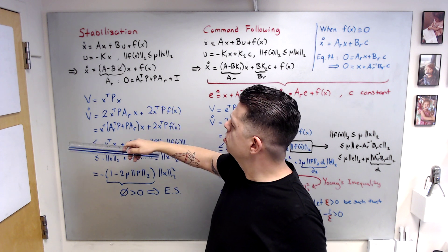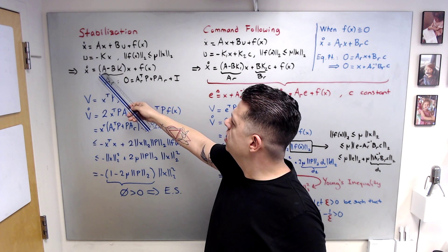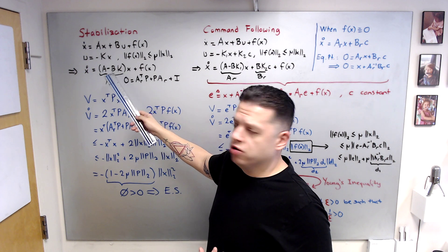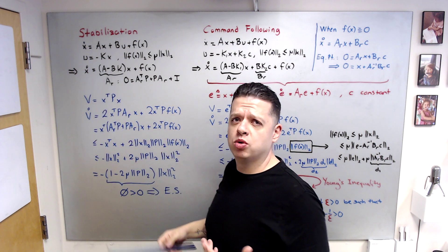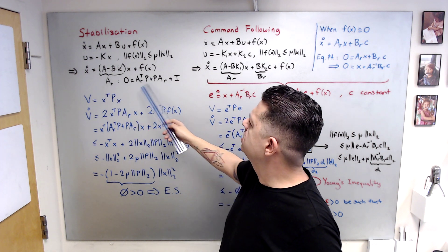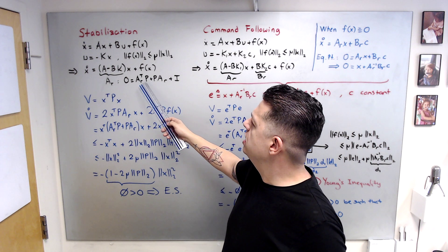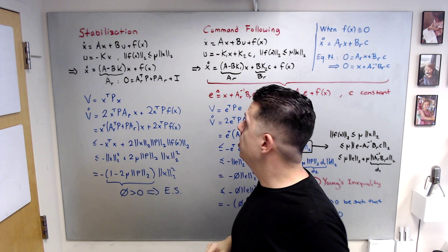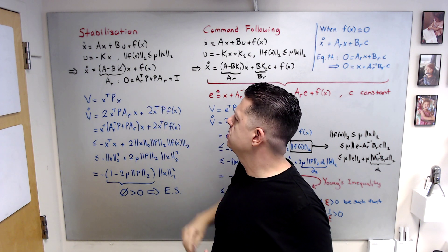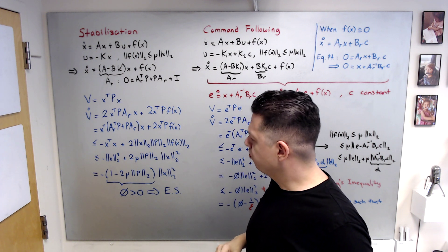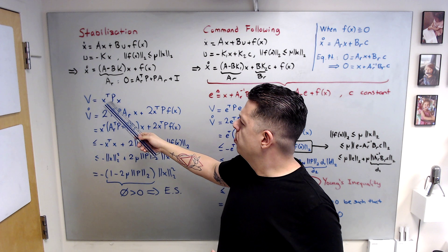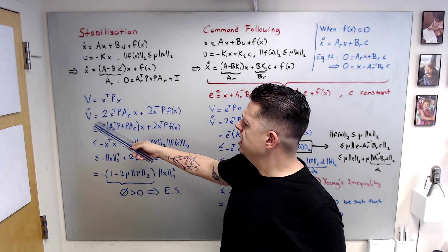When you close the loop with this controller, you get x-dot equals (A - BK)x, which you make Hurwitz by pole placement or LQR. Once it is Hurwitz, it satisfies the Lyapunov equation, where P is a positive definite matrix. In the closed loop you also have the f(x) term. We take the derivative of the Lyapunov function to check stability.